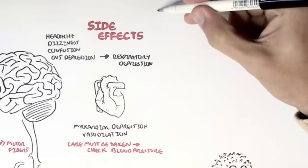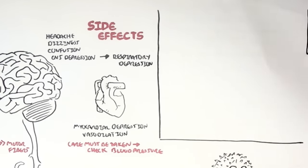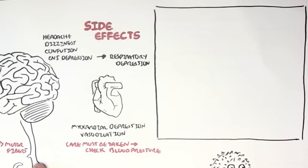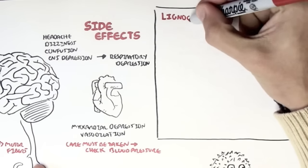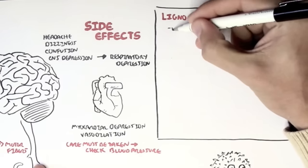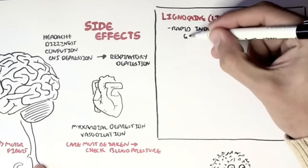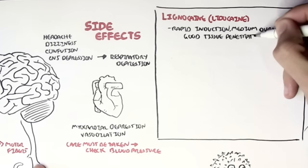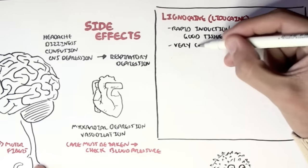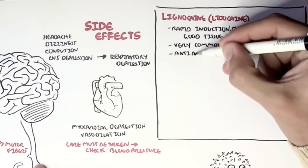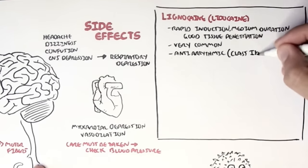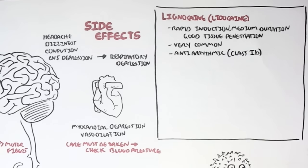Now let's look at some types of local anesthetics, some popular ones. Lignocaine, also called lidocaine in America, has a rapid induction, has a medium duration, so you won't feel pain for medium duration, has good tissue penetration, and it's very commonly used, especially in dentistry. But lignocaine also works as an antiarrhythmic drug, a class 1B. So this lignocaine can be a local anesthetic as well as an antiarrhythmic drug.